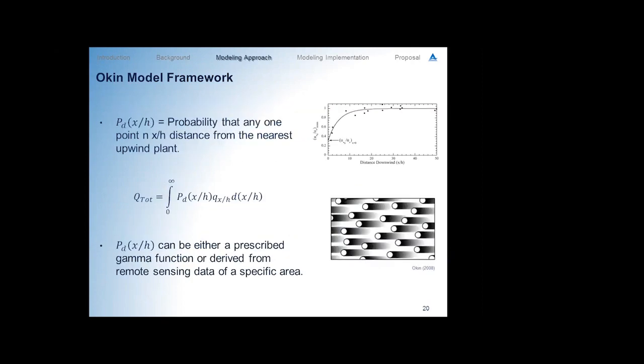To get an estimate of the overall saltation flux on a landscape, we need a probability distribution of what are the odds that any one point is a certain distance from the nearest upwind plant. We can prescribe this with a gamma distribution, or use remote sensing to explicitly measure it for a real place. To get total flux, we estimate the horizontal mass flux for all x-over-h values, multiply by the probability that that x-over-h exists on our landscape, and integrate across all x-over-h — giving us our total mass flux.